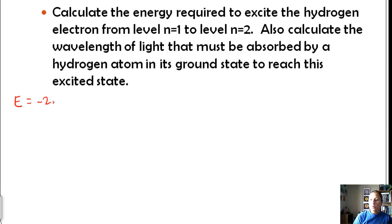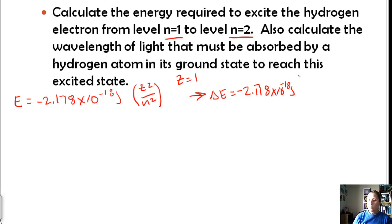E equals negative 2.178 times 10 to the negative 18 joules times the quantity z squared over n squared. Now because this is hydrogen, z is going to equal one and we've got our n equals one to level n equals two. Well since none of these other things are changing besides the n, we can rewrite this equation to say that the change in energy is equal to negative 2.178 times 10 to the negative 18 times the quantity z squared over n final minus z squared over n initial. And our z is the same in both cases. So delta E equals negative 2.178 times 10 to the negative 18 joules times the quantity 1 squared over 2 squared minus 1 squared over 1 squared.